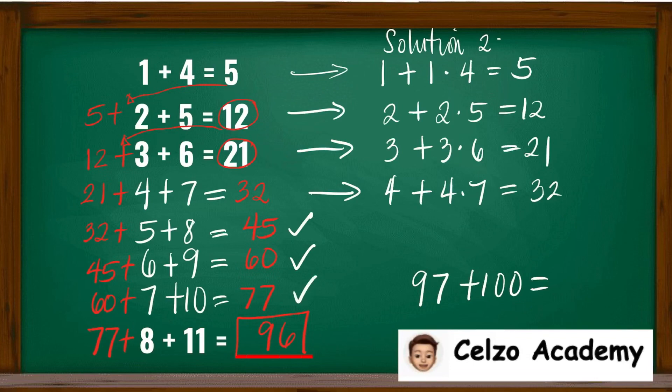And for 8 plus 11, this means that you will have 8 plus 8 times 11, which is also 96, which is correct.